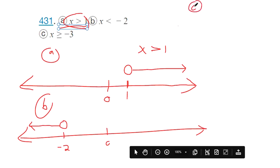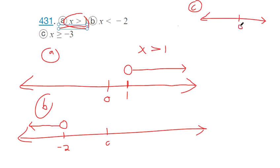And then let's do C up here. Here's 0. Here's negative 3. Watch though, I don't put an open circle. I'm going to put a closed dot.